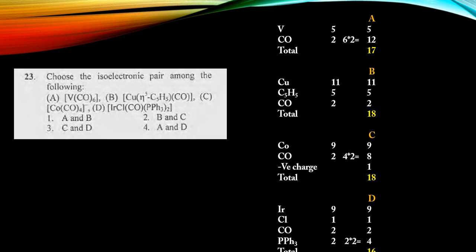From here we can see which compounds have the same number of electrons. From that we can find B and C both have 18 electrons. So option 2 is the correct answer. Thank you, and don't forget to subscribe to our channel.